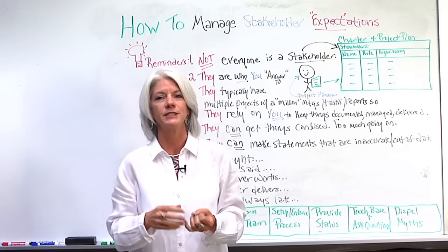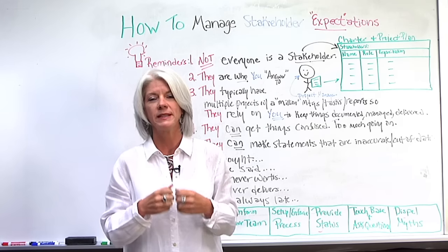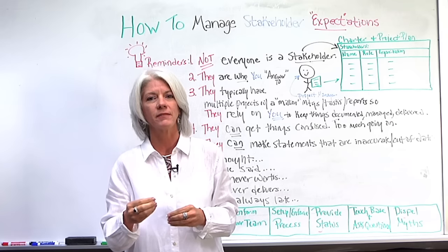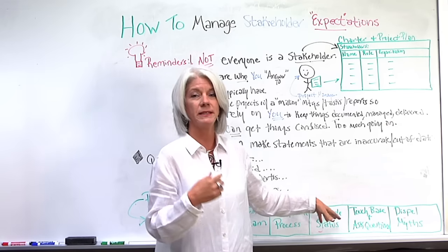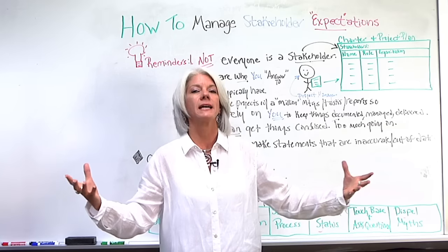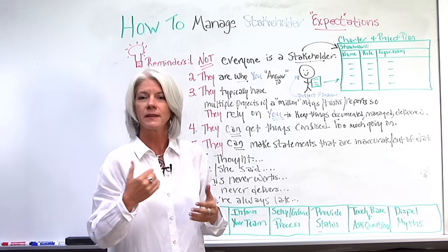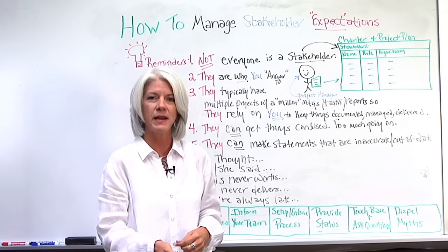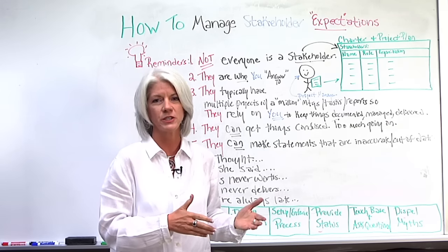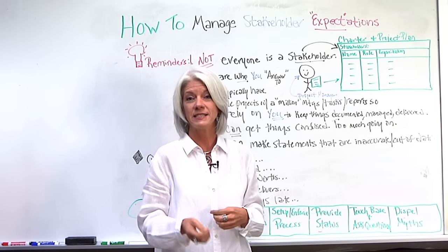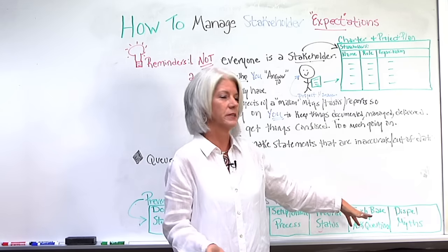Provide status frequently, regularly, and up to date, in the format appropriate for each person. Remember that executives require a different level of status than team members. Team members may need more detail on their tasks, while executives may need more details about the overall status and health of the project. Then touch base regularly and ask questions of your stakeholders — keep in constant contact and ask: 'How is it going? What do you think about the project? Is it meeting your expectations?' By asking questions, you can see what concerns they have instead of being the last to know when something has been missed.